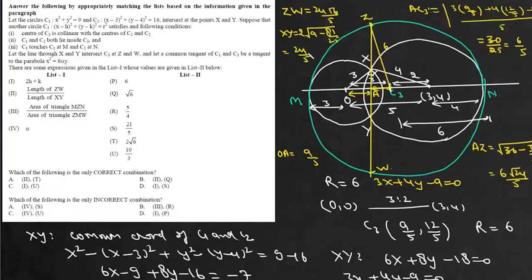Now we can start solving these questions. Now first is the value of 2H plus K. Now H and K they are center of the C3. So basically H is 9 by 5 and K is 12 by 5. So 2H plus K is 18 plus 12 is 30, 30 by 5 is 6. So 2H plus K is 6. So this first it matches with P.